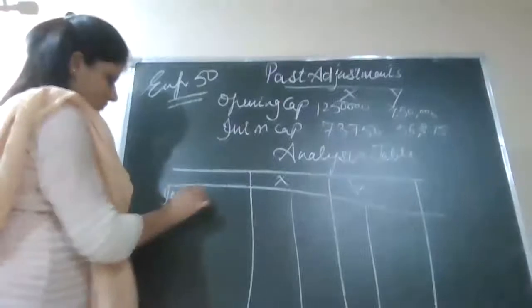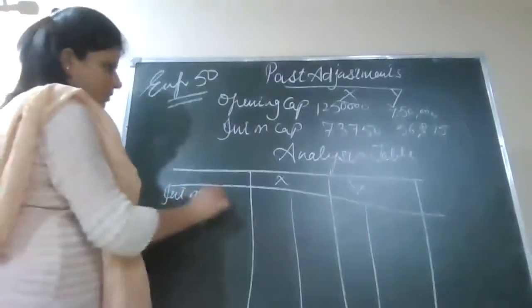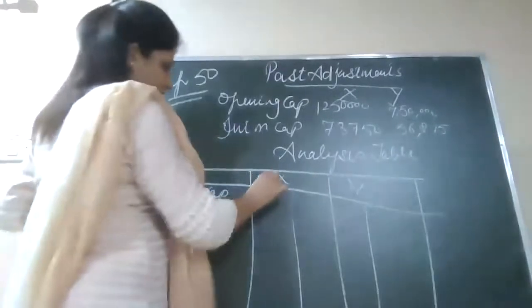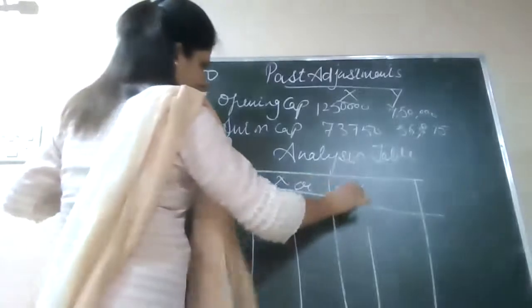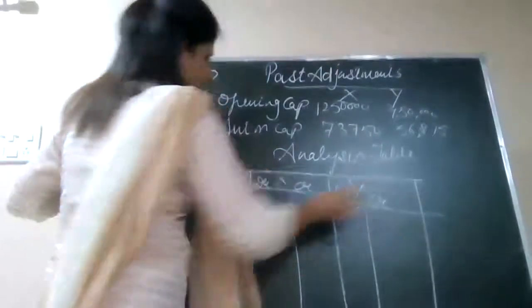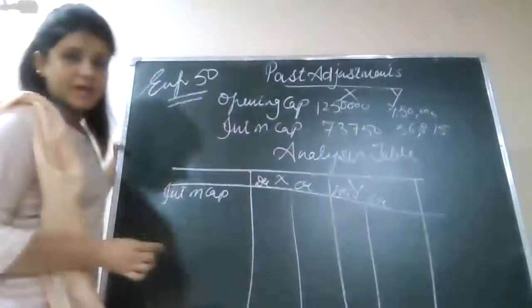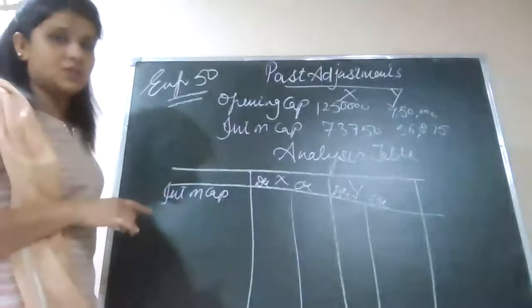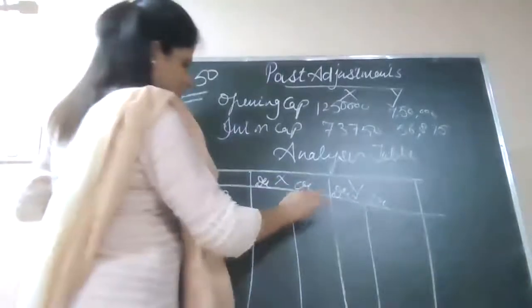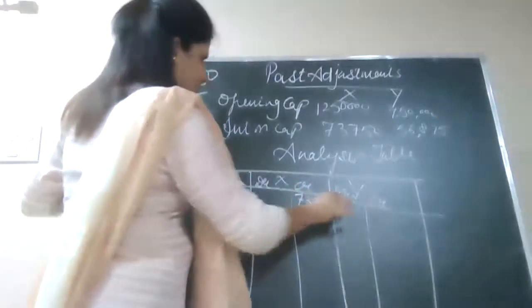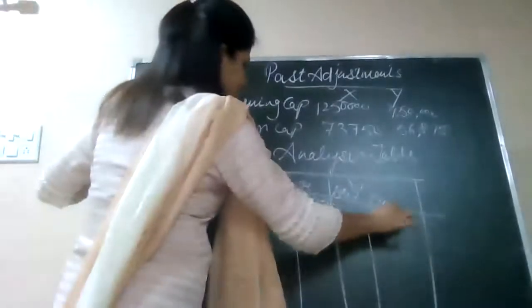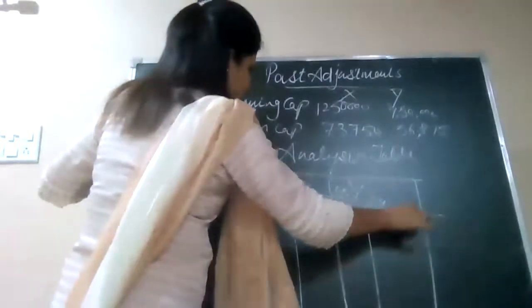Interest on capital already calculated — debit and credit columns. In interest on capital: 73,750 and 56,875.